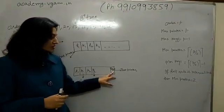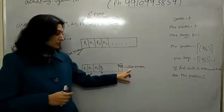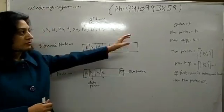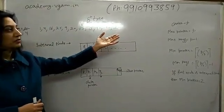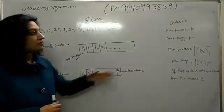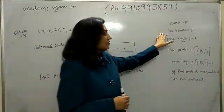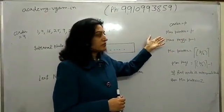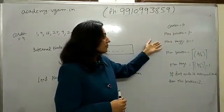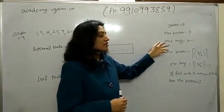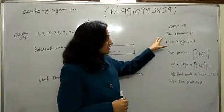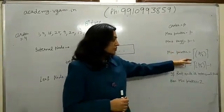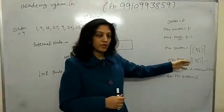At the leaf node we also have one tree pointer which points to the next leaf node. If the order is P, then the maximum pointers possible in a node would be P, as discussed in my B tree video. Maximum keys are always P minus 1, minimum pointers are P divided by 2, and minimum keys are P divided by 2 minus 1.